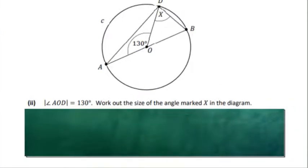So angle AOD is 130 degrees. We want to find the angle X up here. What do we have near X? Well, we know that the angle up here is 90 degrees in total. We can get this angle from the triangle down here. So let's work that out.